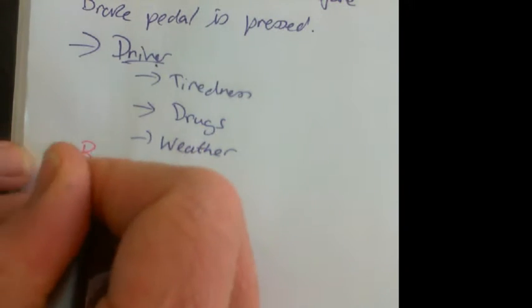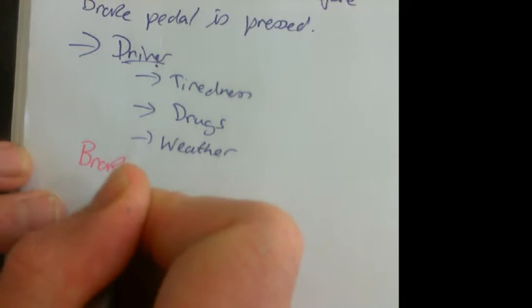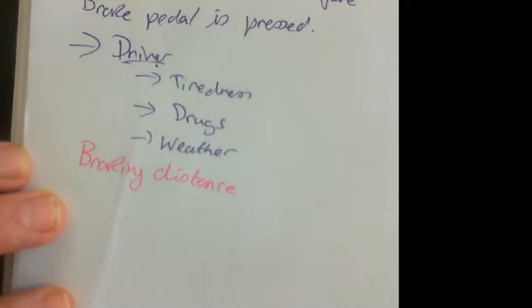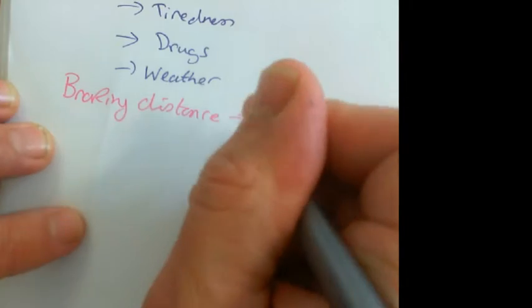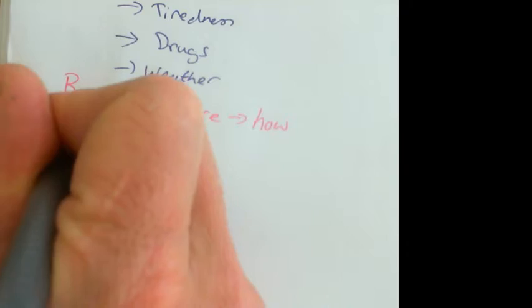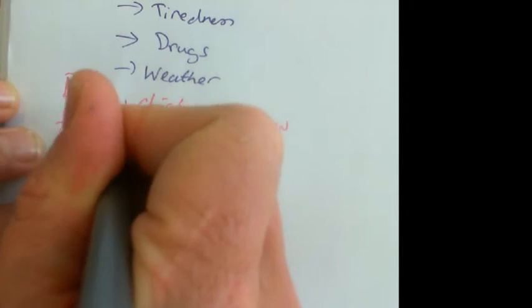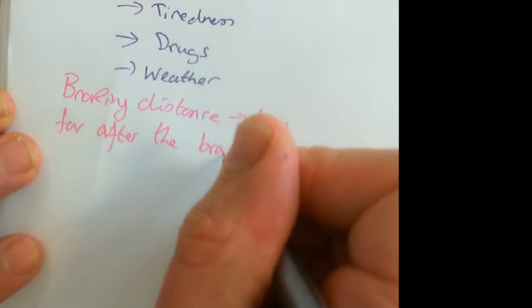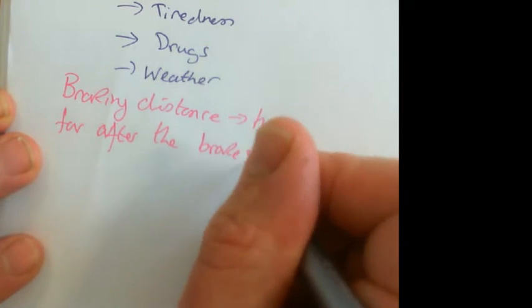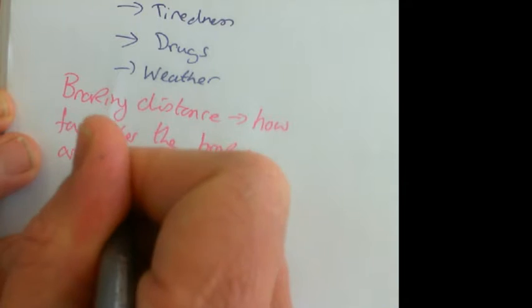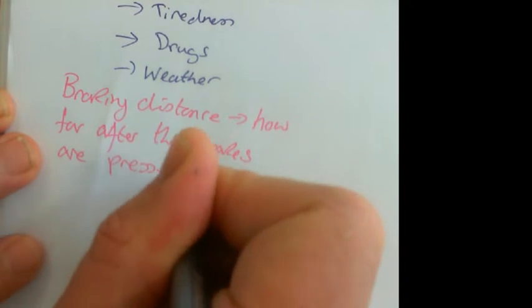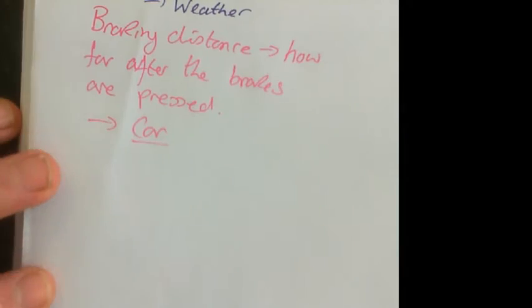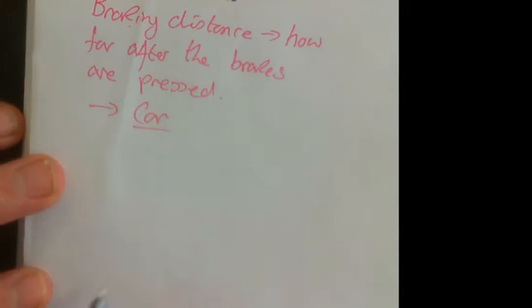Next one, braking distance. Braking distance is how far after the brakes are pressed it takes to stop. This depends on all things to do with the car, because this one is braking distance, so it's to do with the brakes.